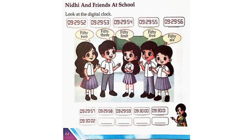Nidhi and friends at school. Look at the digital clock: 9:29:52, 9:29:53, 9:29:54, 9:29:55, 9:29:56, 9:29:57, 9:29:58, 9:29:59, 9:30:00, 9:31:00.